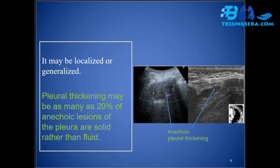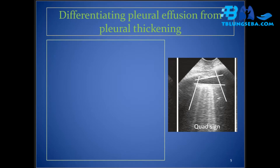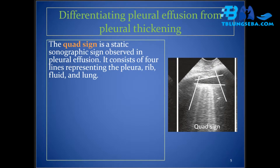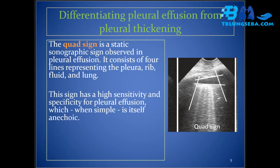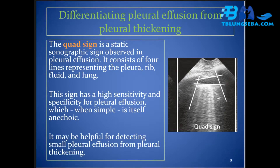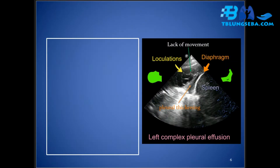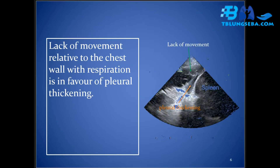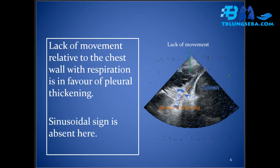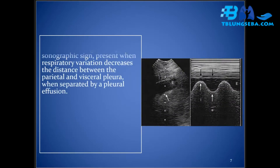The quad sign is a static sonographic sign observed in pleural effusion. It consists of four lines representing the pleura, rib, fluid, and lung. This sign has high sensitivity and specificity for pleural effusion, which when simple is itself anechoic, and may be helpful for detecting small pleural effusion from pleural thickening. Lack of movement relative to the chest wall with respiration is in favor of pleural thickening, and the sinusoid sign is absent in such cases.